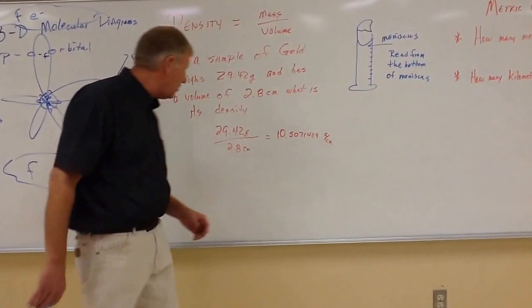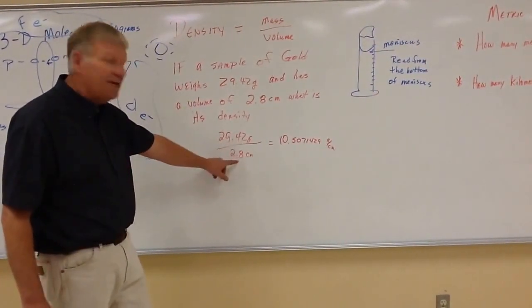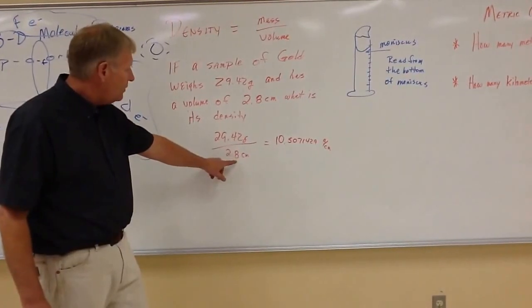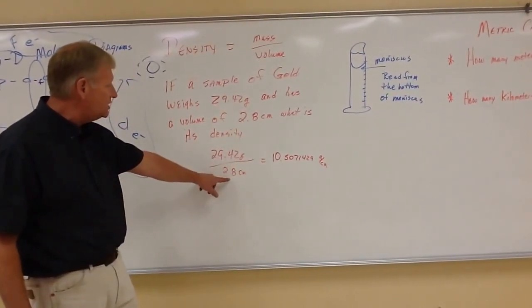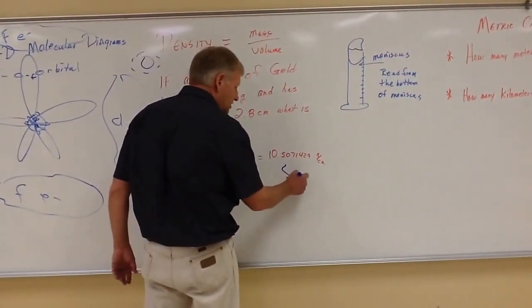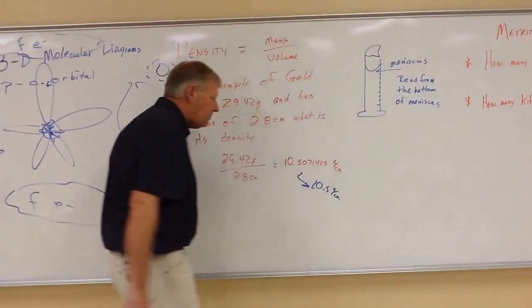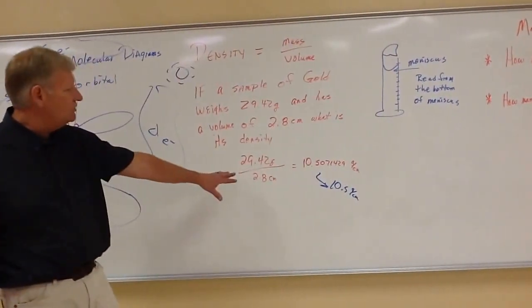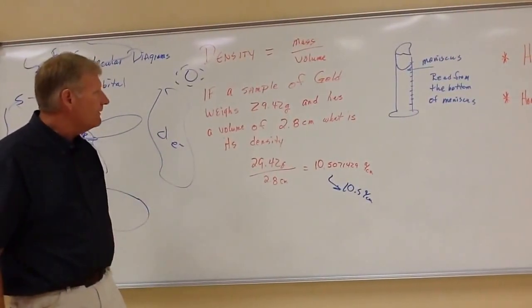It says, don't you calculate it, 10.5071429 grams per centimeter. That looks scientific, but we've got to say to ourselves, what's significant figures? So we look, we're looking for the least number. So here's one decimal place and there's two decimal places, so the least is one. So our answer, this whole thing is going to be equal to 10.5 grams per centimeter. Once again, we're just using the significant figures with the least number of decimal places.